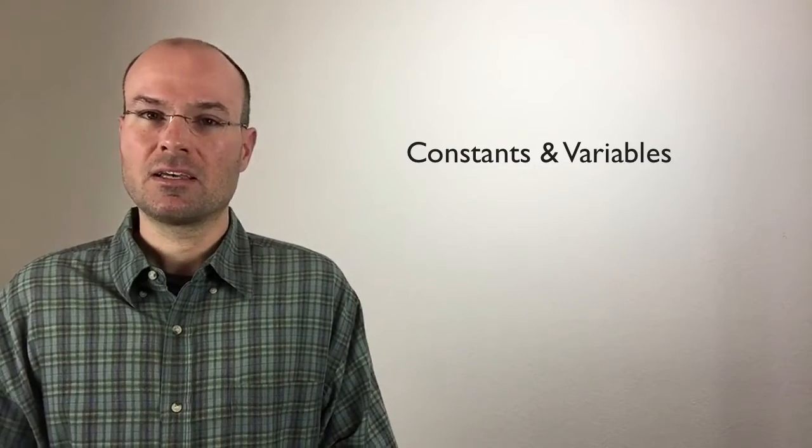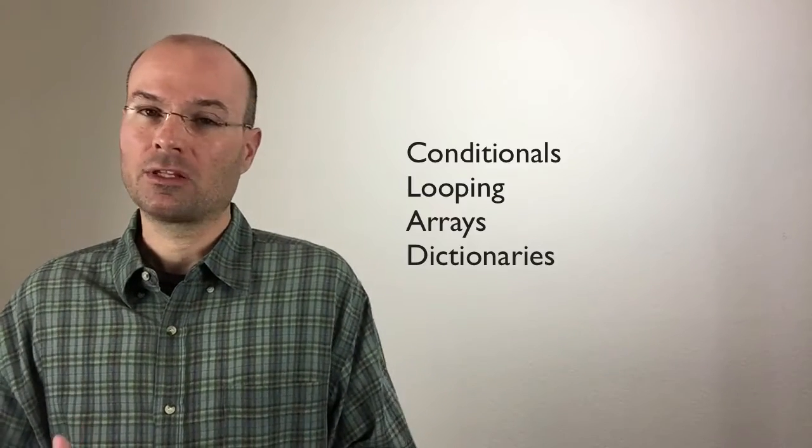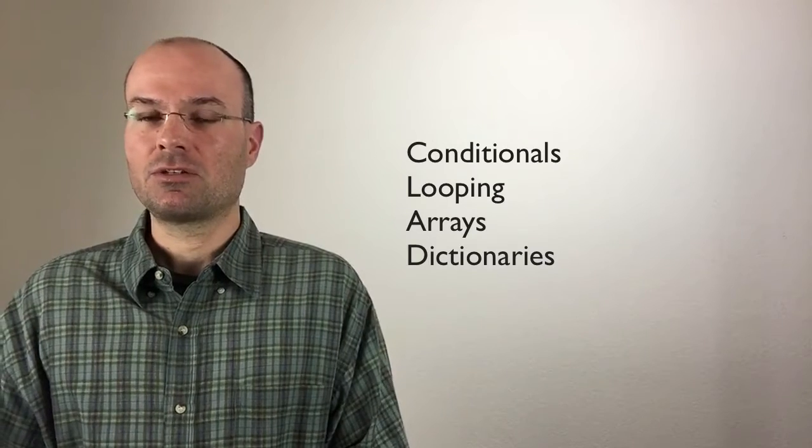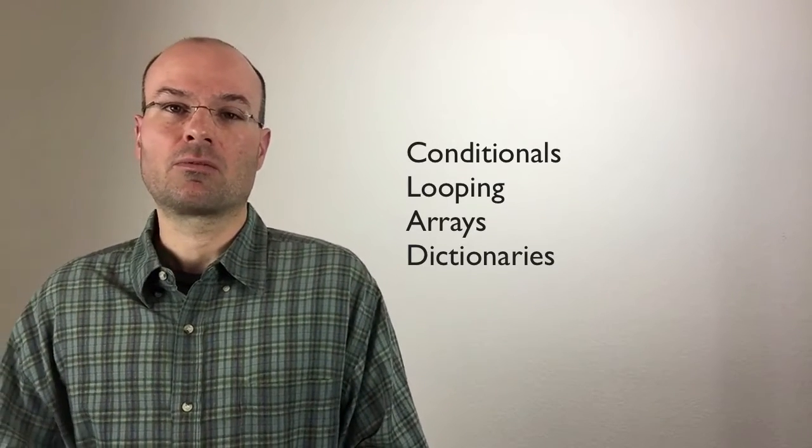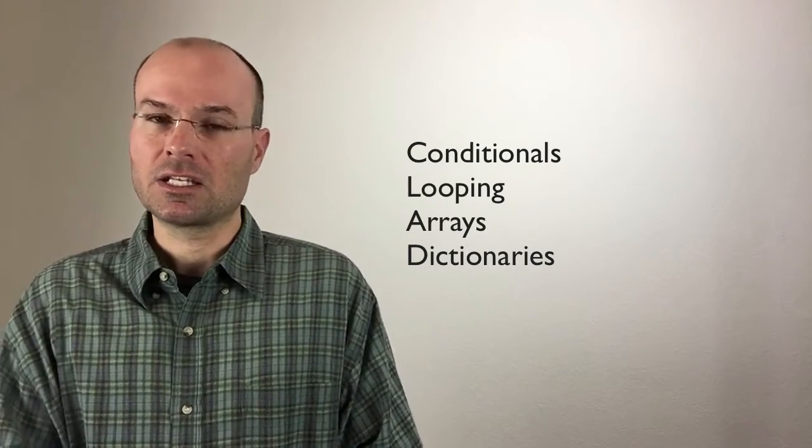We go through and look at constants and variables, some basic items in Swift. We look at constructs such as conditionals, looping, and then we get into how Swift does arrays and lists and dictionaries, and then we move into the object-oriented aspects of it.